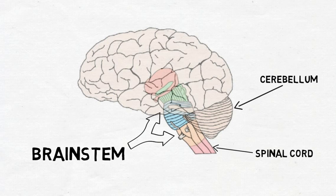It also contains a large number of important nuclei and is essential for both survival and proper cognitive functioning. It consists of three major divisions: the medulla oblongata, the pons, and the midbrain.